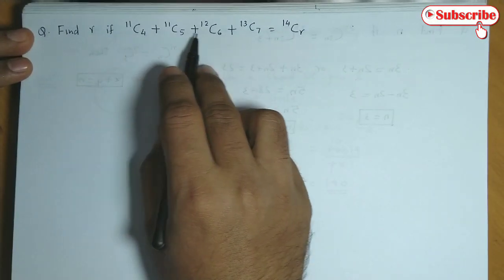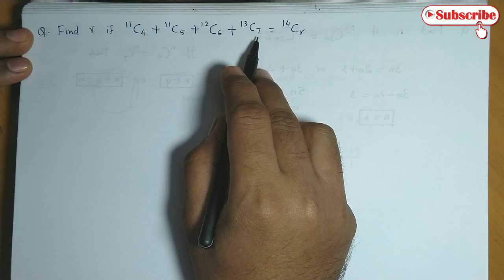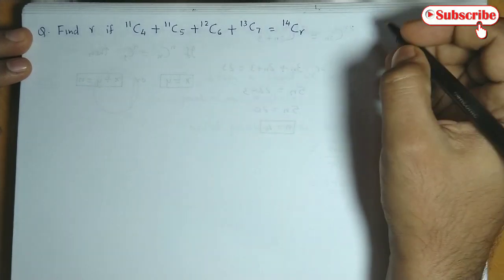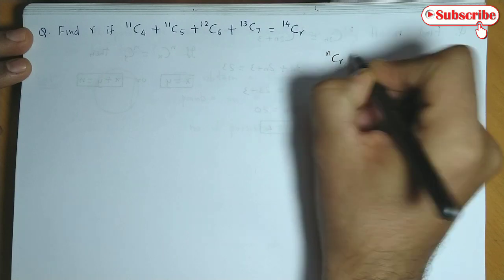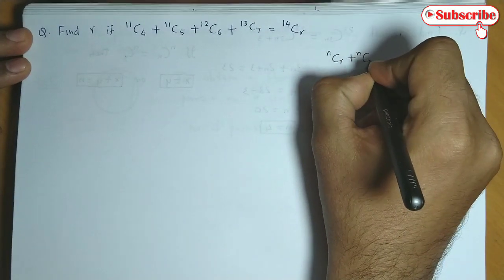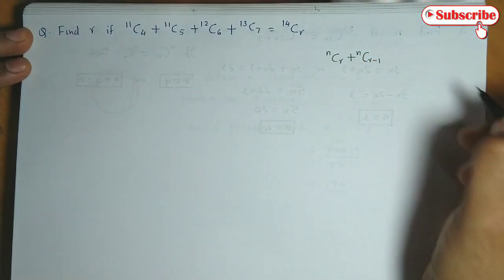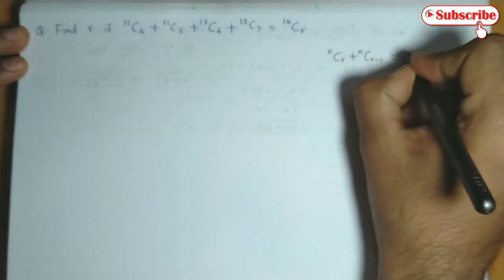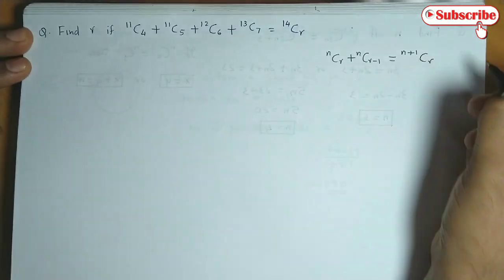Now here we could combine these four combinations into a single combination by using the property NCR plus NC(R-1) combines into (N+1)CR.